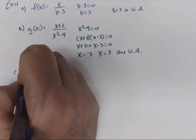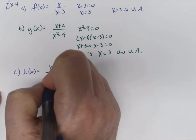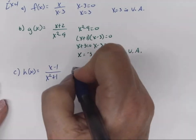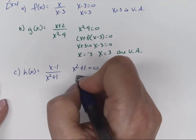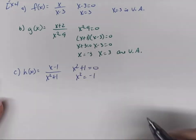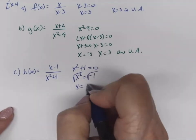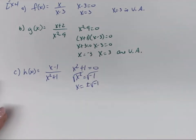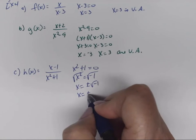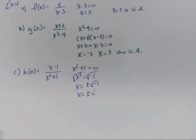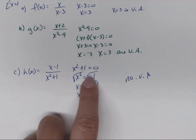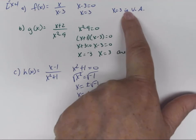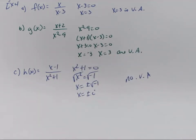For part C, h(x) = (x-1)/(x²+1). Setting x²+1 = 0 gives x² = -1, so x = ±i. That's imaginary, which means there is no vertical asymptote. So here we had one VA, in part B we had two, and here we have none.